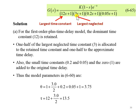So 3 is the largest neglected, followed by 0.2 and 0.05. So we identify the largest time constant and the largest neglected first.